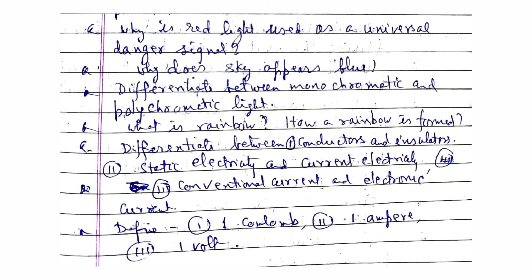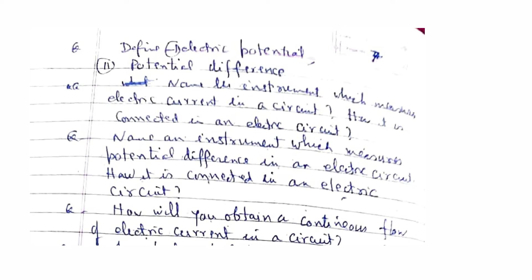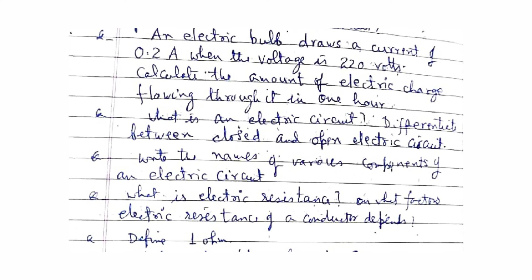Differentiate between conductors and insulators, static electricity and current electricity, conventional current and electric current. Define one coulomb, one ampere, and one volt. Name the instrument which measures electric current in a circuit and how it is connected. Name the instrument which measures potential difference in an electric circuit and how it is connected. How will you obtain a continuous flow of electric current in a circuit? An electric bulb draws a current of 0.2 ampere when the voltage is 220 volts — calculate the amount of electric charge flowing through it in one hour.